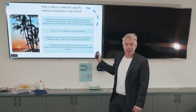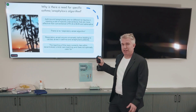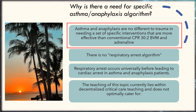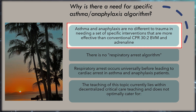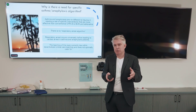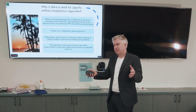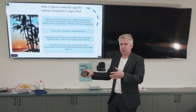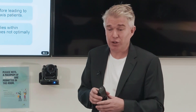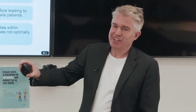This especially applies to asthma and anaphylaxis, where it really needs to be an ABC approach. Why is there a need for a specific asthma and anaphylaxis algorithm? Asthma and anaphylaxis are no different to trauma in needing specific interventions that are more effective than CPR and adrenaline. There is no respiratory arrest algorithm out there. When these patients have a respiratory arrest, lots of protocols just say go to the ALS algorithm — which is not what they need. They need ABC. Respiratory arrest occurs universally in asthma and anaphylaxis as they become bradycardic and asystolic.